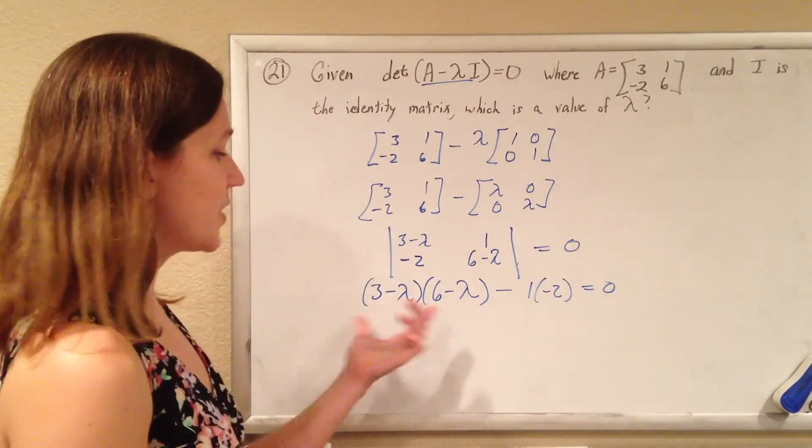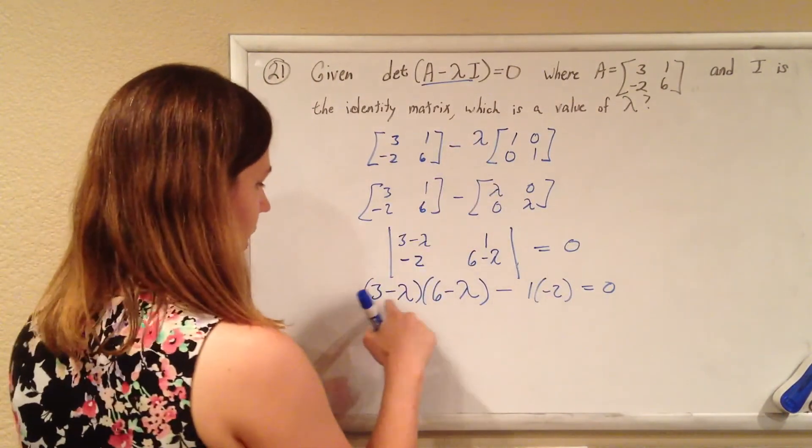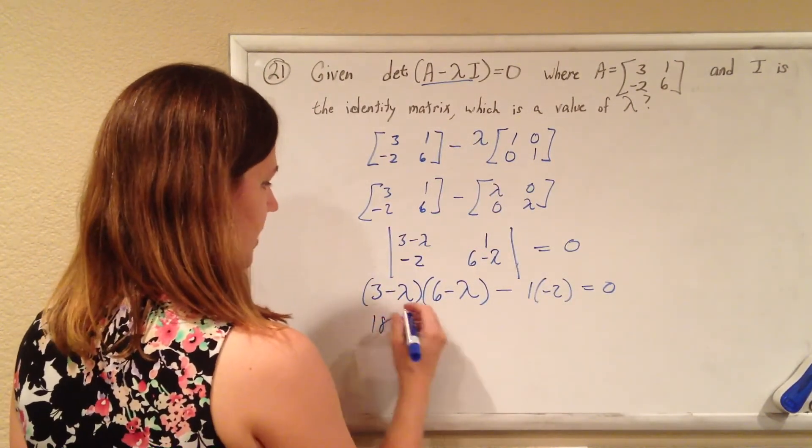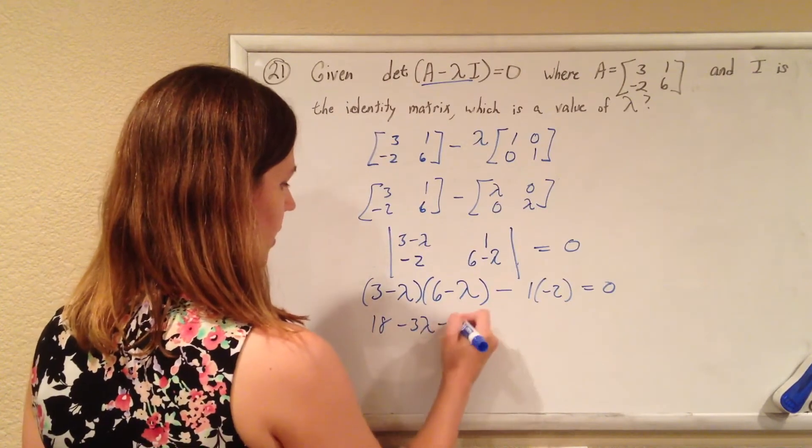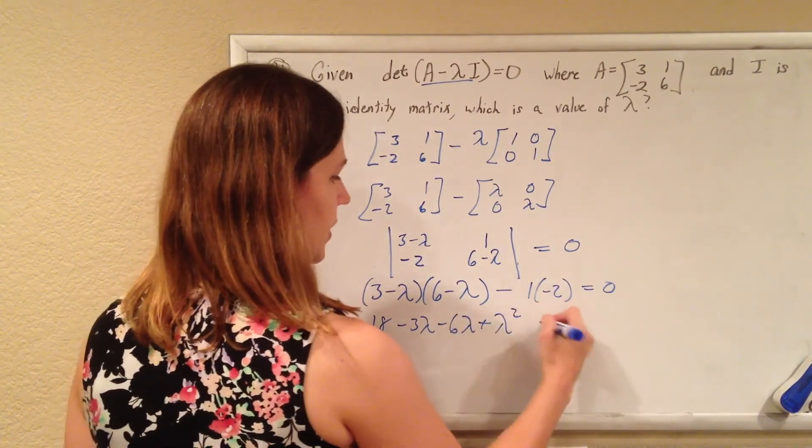So, it's an equation, there's one unknown, we're good. So just keep going. Foil this out. 18 minus 3 lambda, minus 6 lambda, plus lambda squared, plus 2, equals 0.